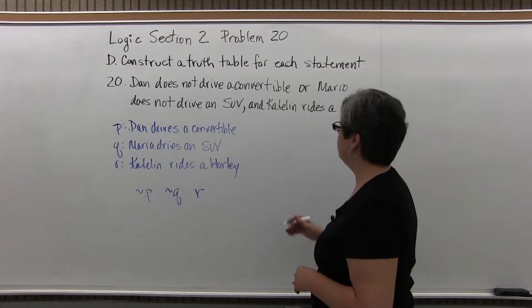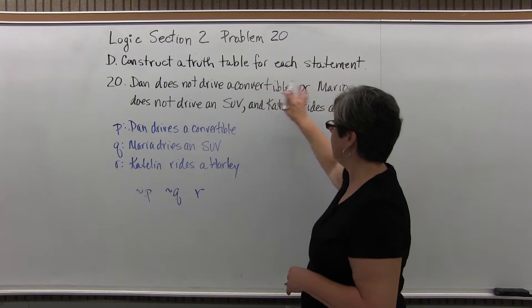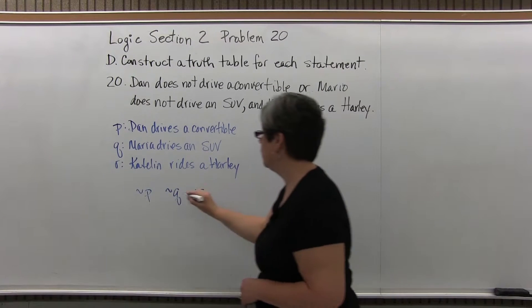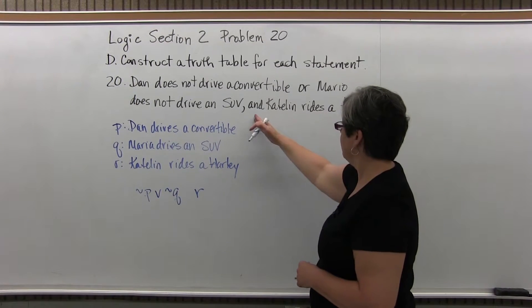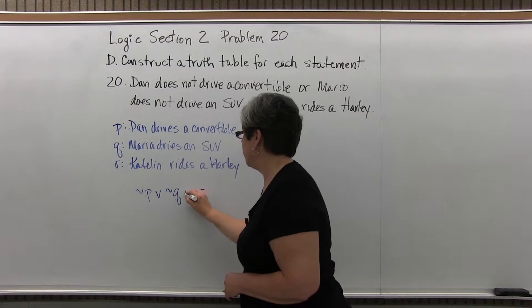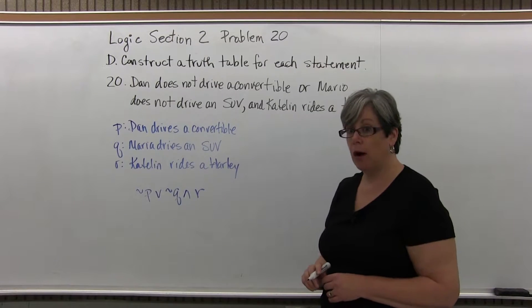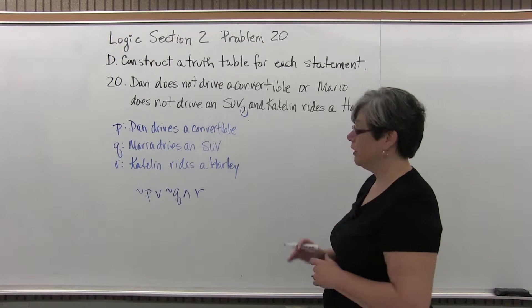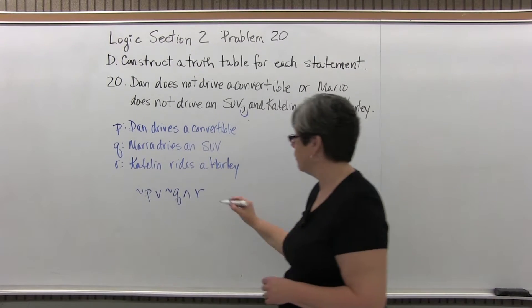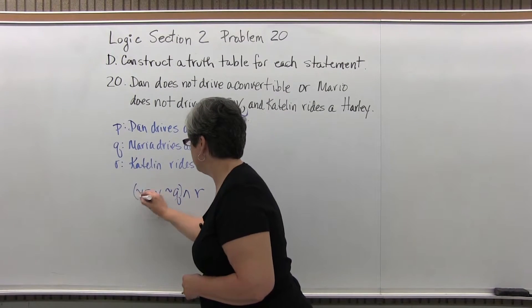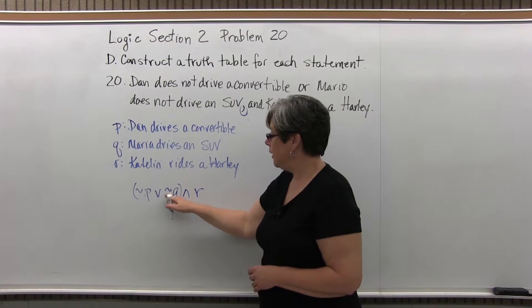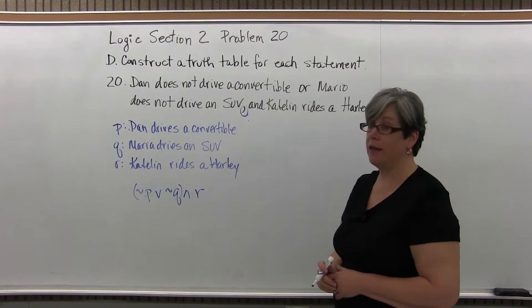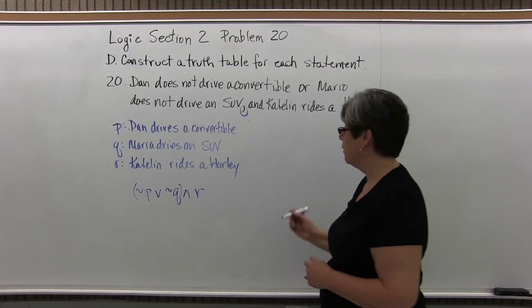Now we're going to look for our logical connectives. We have an OR between 'Dan does not drive a convertible' and 'Mario does not drive an SUV,' so we're going to have an OR there. And we have an AND with 'Caitlin rides a Harley.' Looking for where our parentheses go — we have a comma here, which means Caitlin rides a Harley needs to be separate from the rest. So we'll put parentheses around the not-P or not-Q that comes before that comma and the AND. Time for our table.